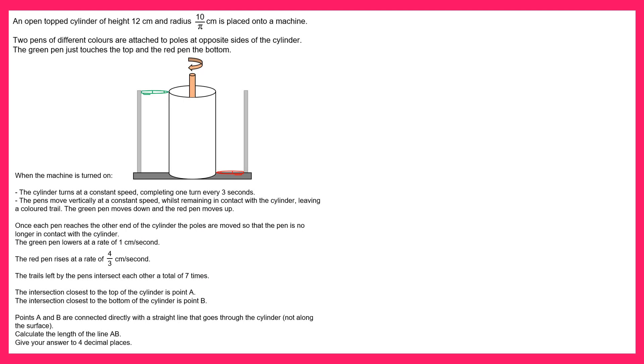Hello and welcome to the solution video to spicy question number 50. In this question we're told we've got a cylinder with height 12 and the radius is 10 over pi. We're going to imagine that we roll out this cylinder so it becomes a flat rectangle like this. Now the height of that is just 12 and the length across the top of this rectangle would just be the circumference of the circle.